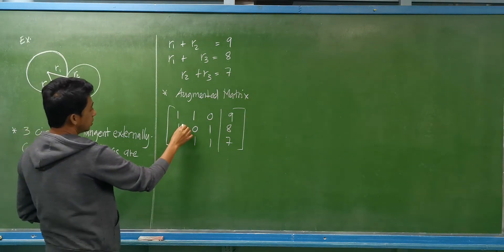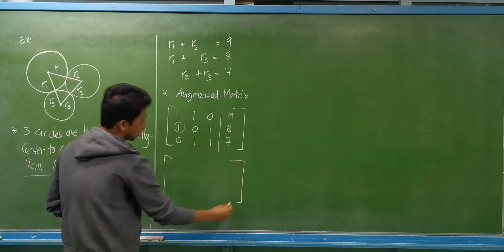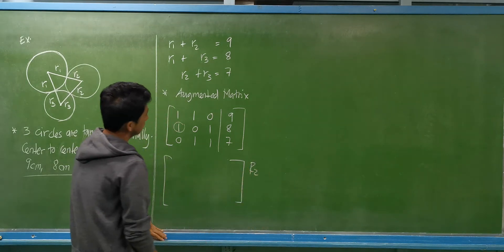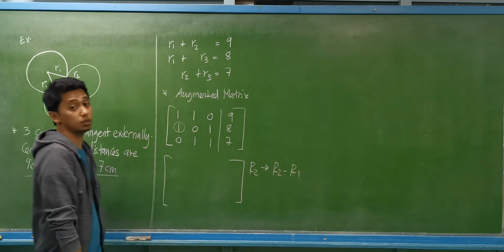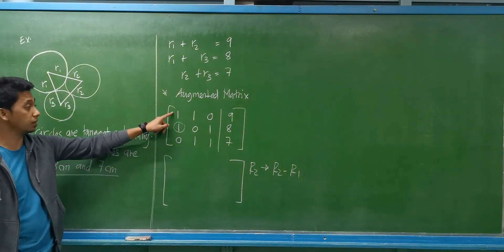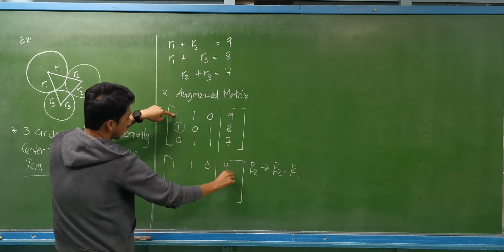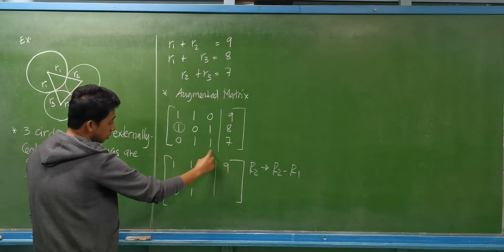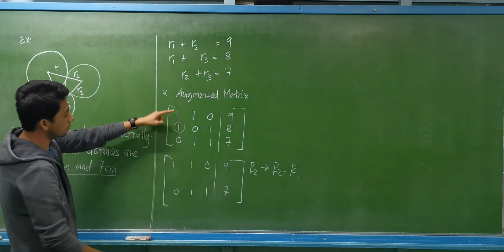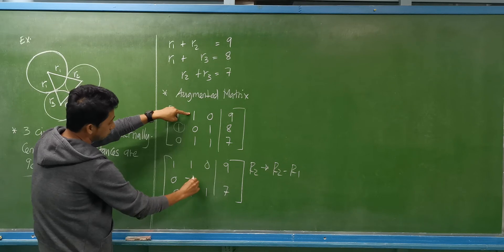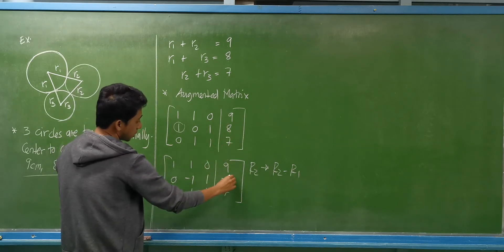How do we eliminate this element? Row number 2 will become row number 2 minus row number 1. Row 1 is not affected: 1, 1, 0, 9. Row 3 remains: 0, 1, 1, 7. For R2 minus R1: 1 minus 1 is 0; 0 minus 1 is negative 1; 1 minus 0 is 1; and 8 minus 9 is negative 1.